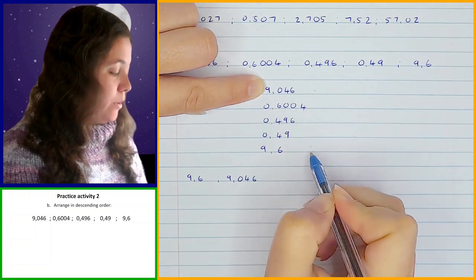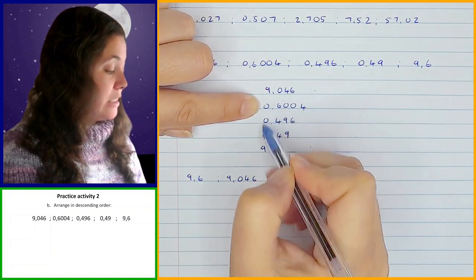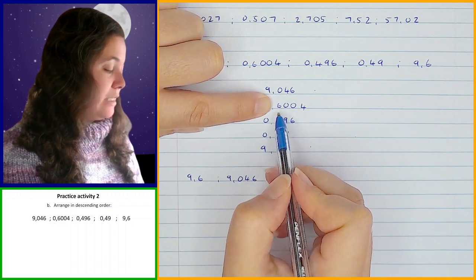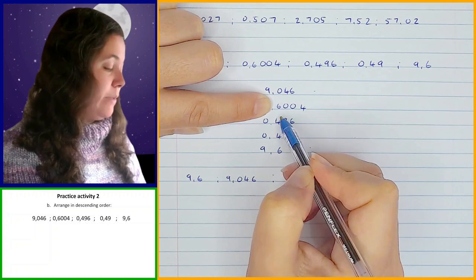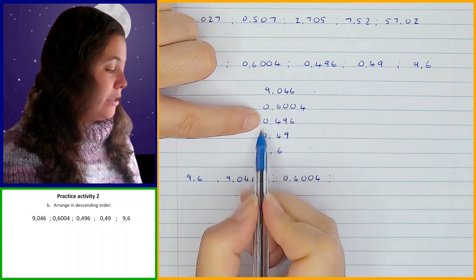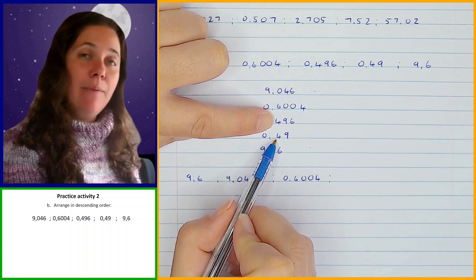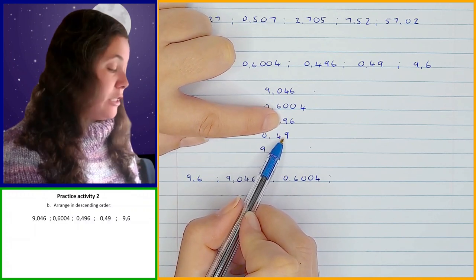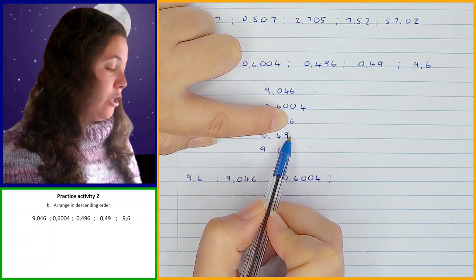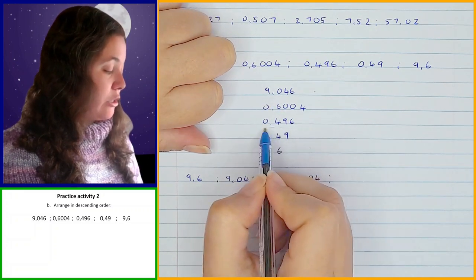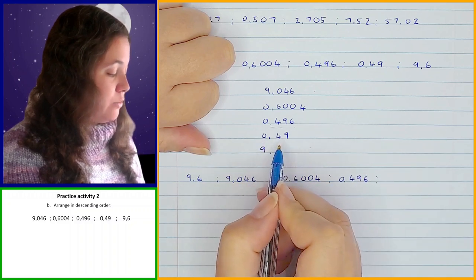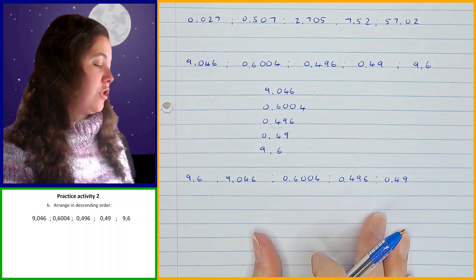Now the next one comes from the remaining fractions. These all have nothing in the ones position. Looking at the tenths position: 0.6004 has 6, while 0.496 and 0.49 both have 4. So 6 is greater, meaning 0.6004 is next. Now comparing 0.496 and 0.49: they have the same in the tenths position and the same in the hundredths position. In the thousandths position, 0.496 has a 6 but 0.49 has nothing, so 0.496 has a greater value than 0.49. So 0.496 is next, and the last one is 0.49.